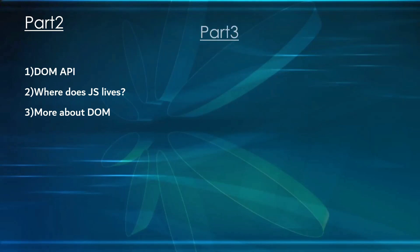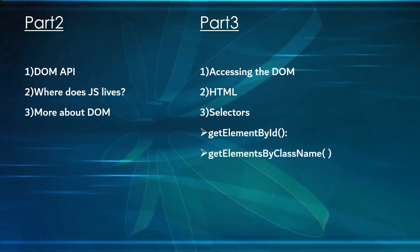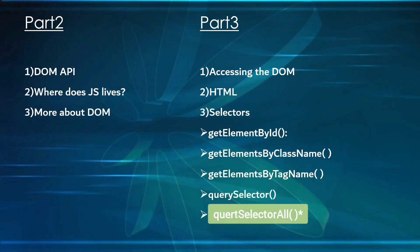In Part 3, we are going to see how to access the DOM, which is very important. We will also cover a bit of HTML both practically and theoretically. Then we will look at selectors: getElementById, getElementsByClassName, getElementsByTagName, querySelector, and querySelectorAll. These methods are very important — each returns different values, and we will see the differences and when to use each one.